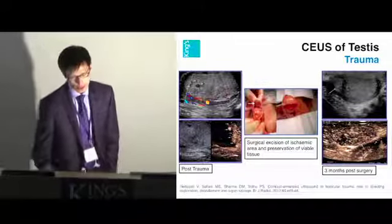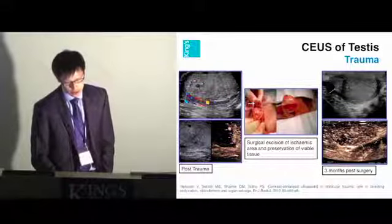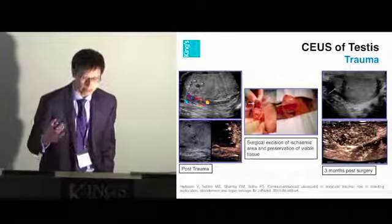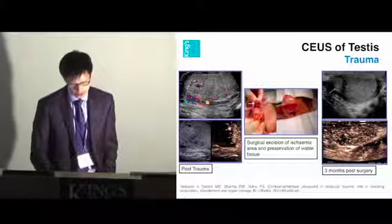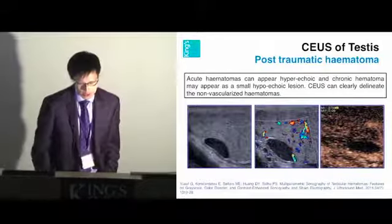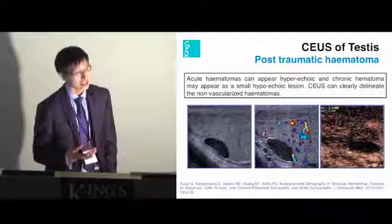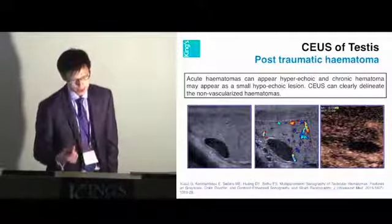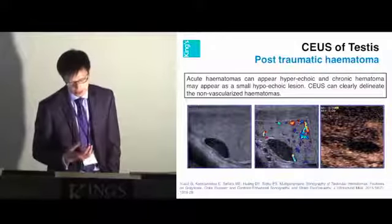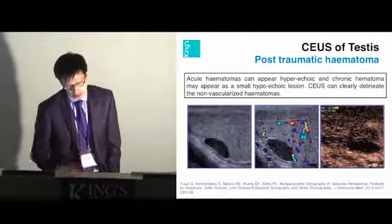The ischemic area was excised and the remaining testis was preserved according to the preoperative contrast ultrasound image, which clearly demonstrated viable tissue to be saved during the operation. Three months later, reperfusion of the entire remaining testis was confirmed. This highlights CEUS in offering an imaging pathway to assess viability and vascularity. In chronic post-traumatic hematomas, when we encounter any hypoechoic lesion within the testis even with a trauma history, CEUS can identify the absence of vascularity, which is a hallmark of a benign lesion.